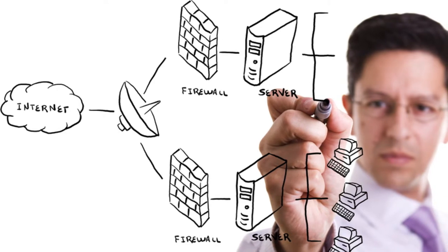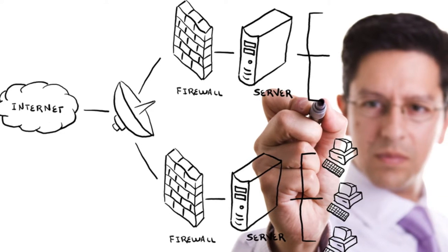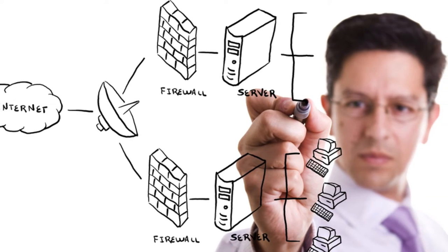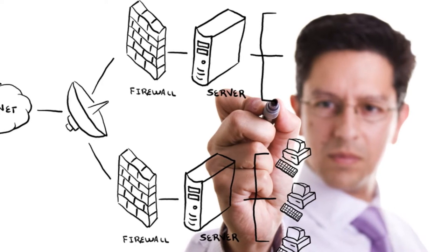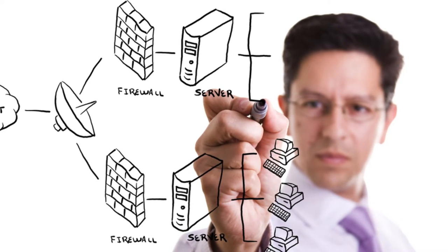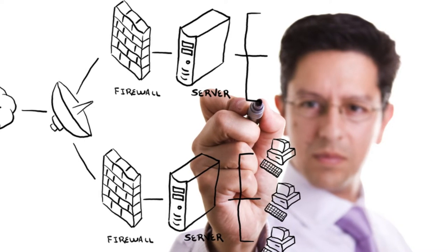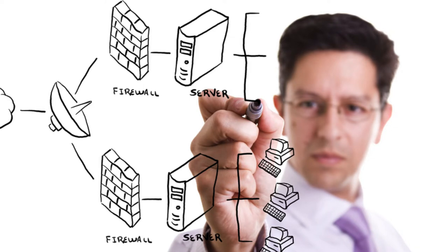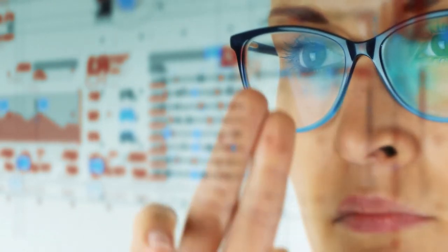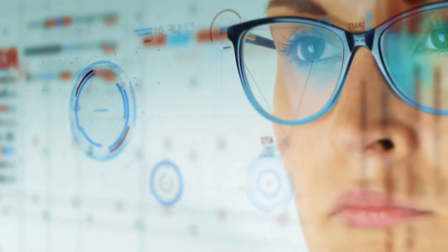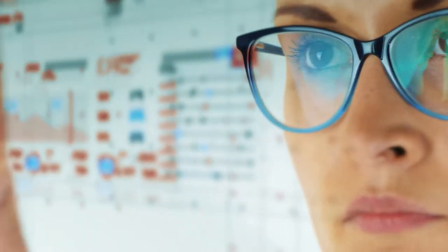If you already have a working risk management process, you already have this information in network diagrams, system documentation, controls, framework diagrams and matrices, and other tools — hopefully automated — that are updated as part of a healthy change management program. If not, answering these questions is your first step.